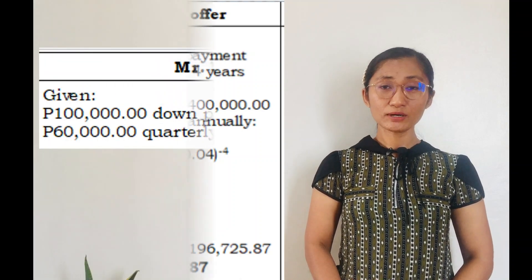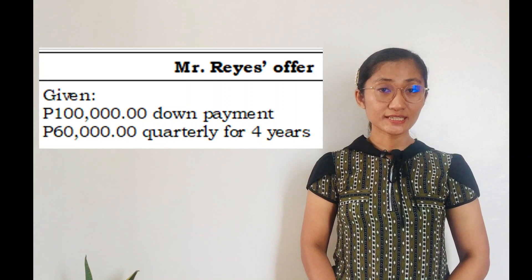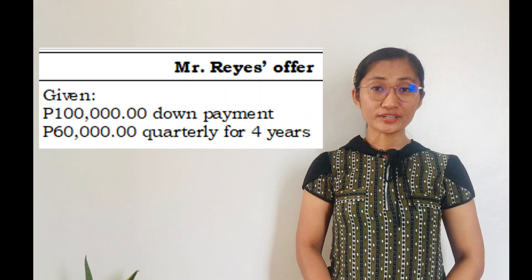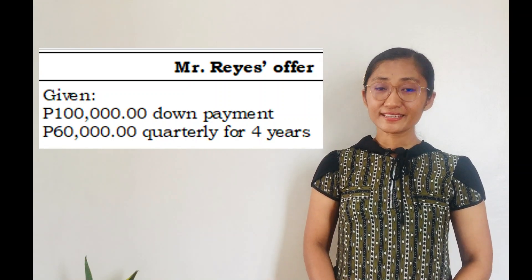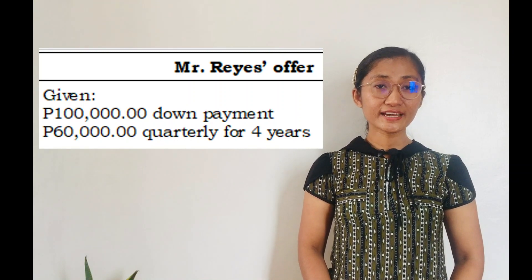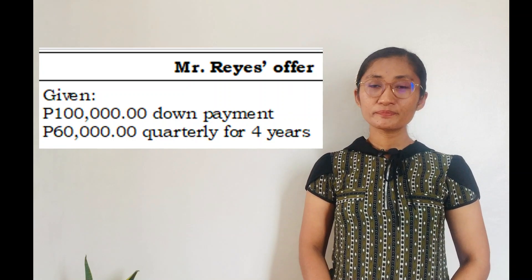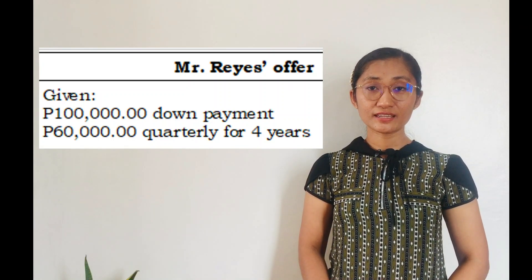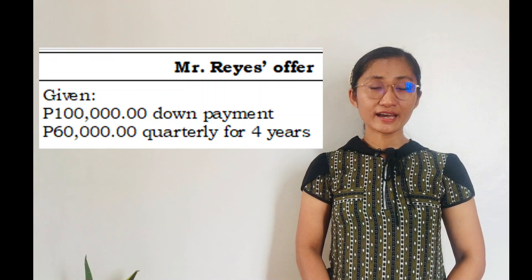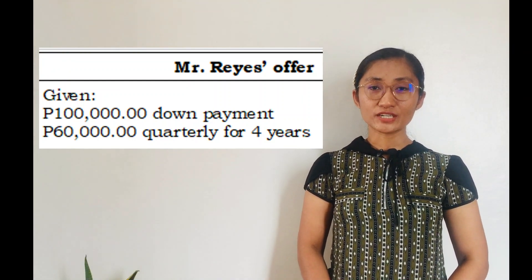Now, how about Mr. Reyes' offer? The given are ₱100,000 as down payment plus ₱60,000 quarterly for 4 years. Let us compute for the present value of a general annuity to be paid quarterly and compounded at 4% annually. As you can recall, we discussed general annuity in our previous lesson, and this particular case of Mr. Reyes involves a general annuity.